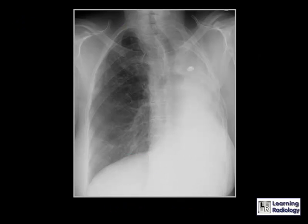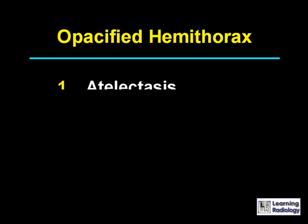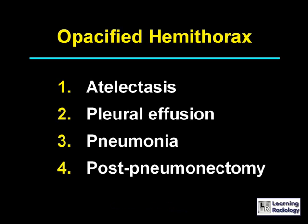This is the next differential: opacified hemithorax. There are four causes: atelectasis, pleural effusion, pneumonia, and post-pneumonectomy.